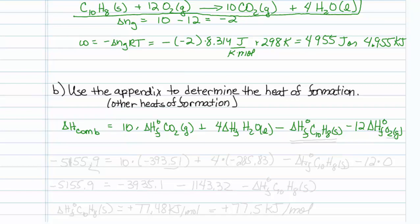This is our variable that we're going to solve for, and we're going to put in the values for everything else. Heat of combustion we're given, that's minus 5155.9. On this side we have 10 times the heat of formation of CO2 gas, which turns out to be minus 393.51 plus 4 times the heat of formation of H2O, which is minus 285.83, minus the heat of formation of our naphthalene, that's the variable we're going to solve for, and then minus 12 times the heat of formation of oxygen, which is an element in its standard state, which is 0.